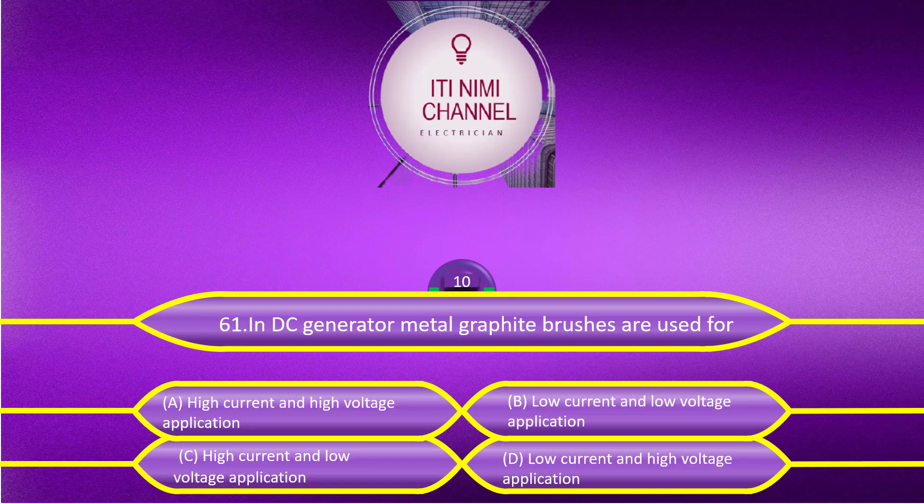In a DC generator, metal graphite brushes are used for: Option A, high current and high voltage application. Option B, low current and low voltage application. Option C, high current and low voltage application. Option D, low current and high voltage application.